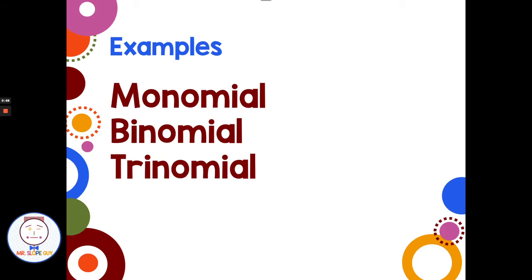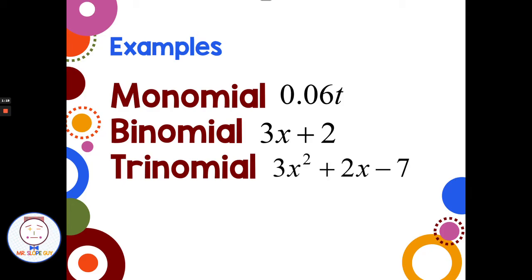An example of a monomial is a number and a variable with no add or subtract sign. A binomial like 3x + 2 has two terms separated by one add or subtract sign. A trinomial has three terms separated by two add or subtract signs. You can look at the number of operation signs — one sign gives you a binomial, two signs give you a trinomial.